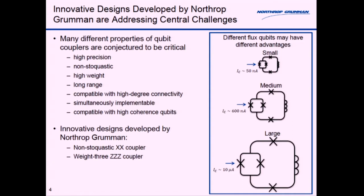When looking at the design space it can be quite intimidating because there are a number of different couplers and qubit properties that are conjectured to be critical. You want the coupling to be high precision, might want it to be non-stoquastic, high weight, long range, compatible with high degree connectivity as we heard from Google, simultaneously implementable—all of these different properties potentially you'd like them all implemented at the same time.